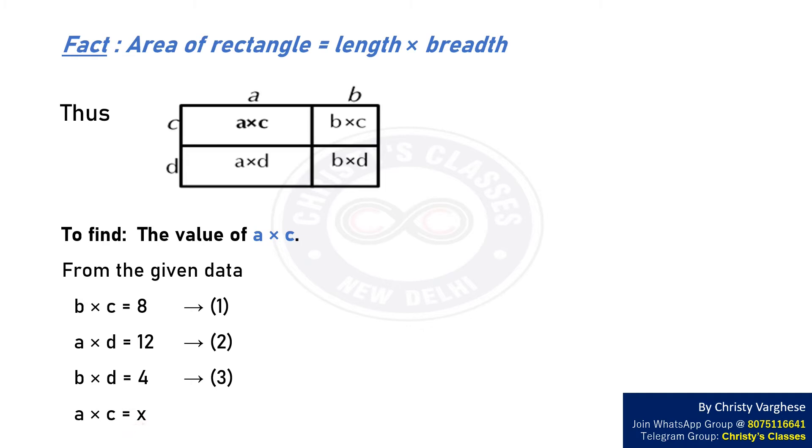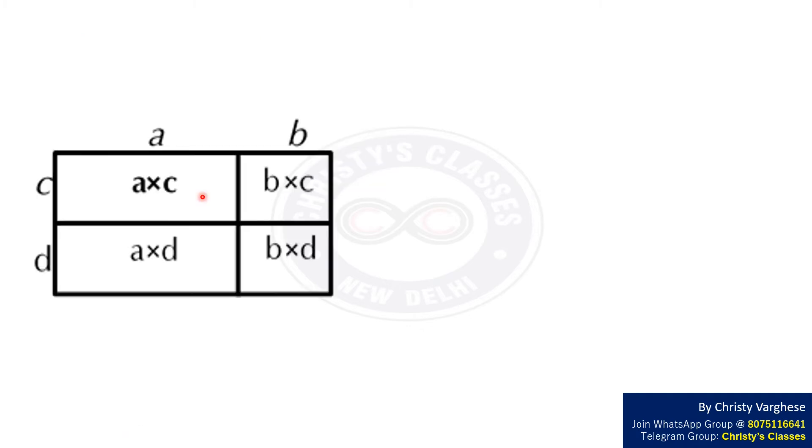Let us denote A into C by X. A into C equals equation 1 into equation 2 by equation 3. That is, B into C into A into D by B into D.